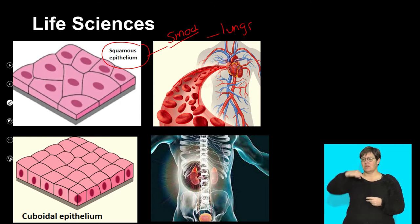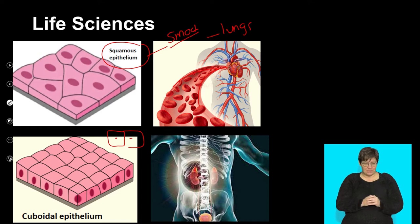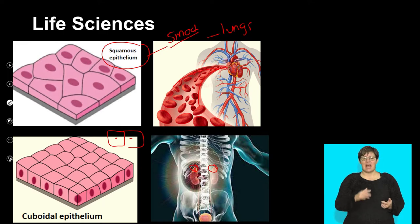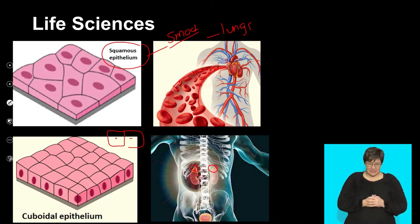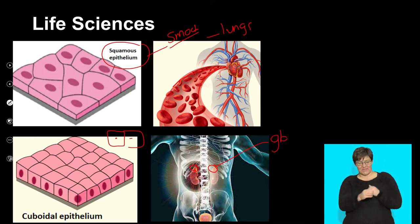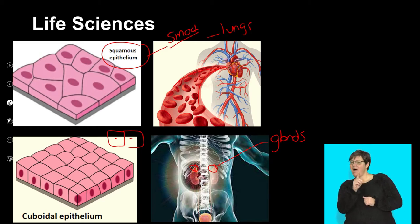Then we looked at cuboidal epithelium. What does cuboidal mean? It's as high as it is long. We're going to find cuboidal cells in glands — our adrenal glands, our sweat glands, our thyroid glands — anywhere where we're going to secrete something. You'll probably find them later when you look at the kidney as well.